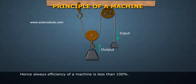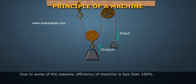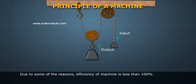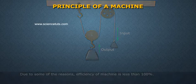Hence, the efficiency of a machine is always less than 100%. Due to some reasons, efficiency of a machine is less than 100%.